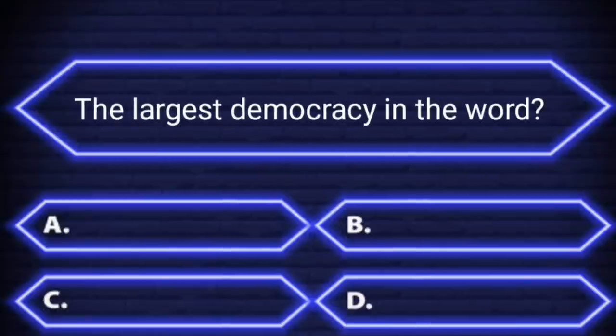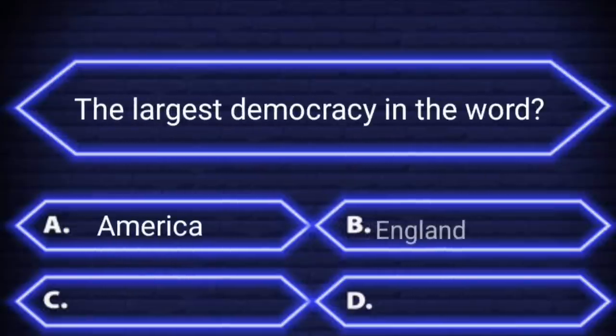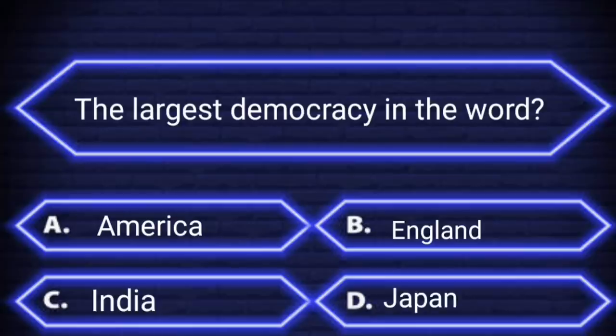The largest democracy in the world? A. America. B. England. C. India. D. Japan. Your times start now.